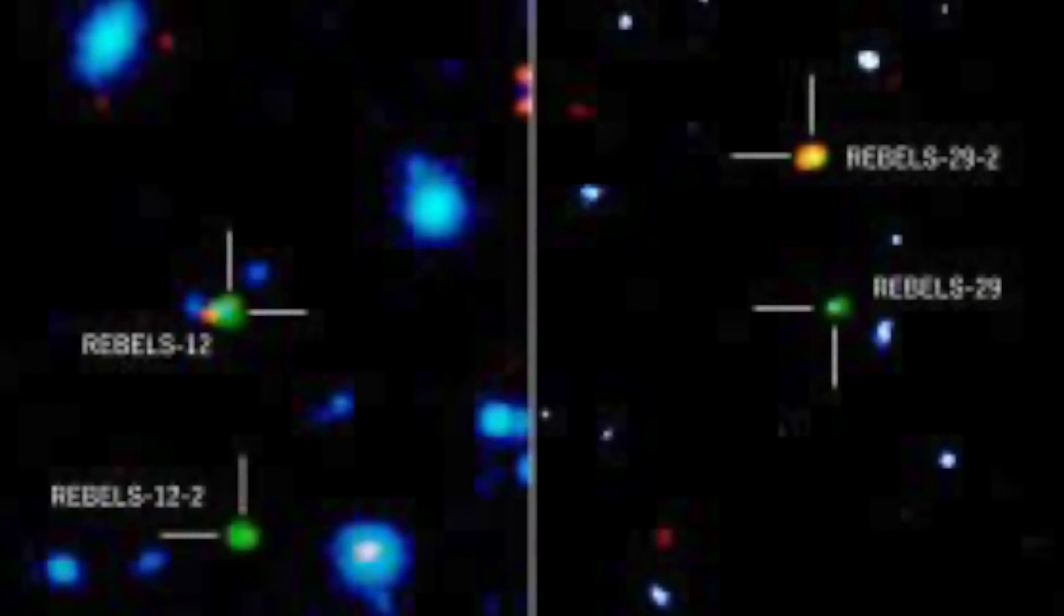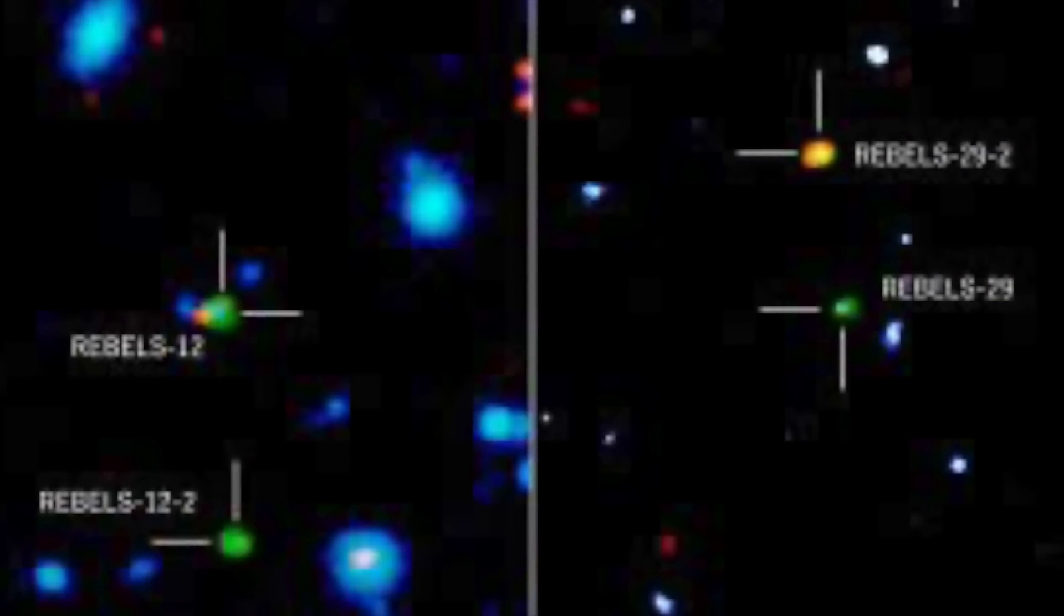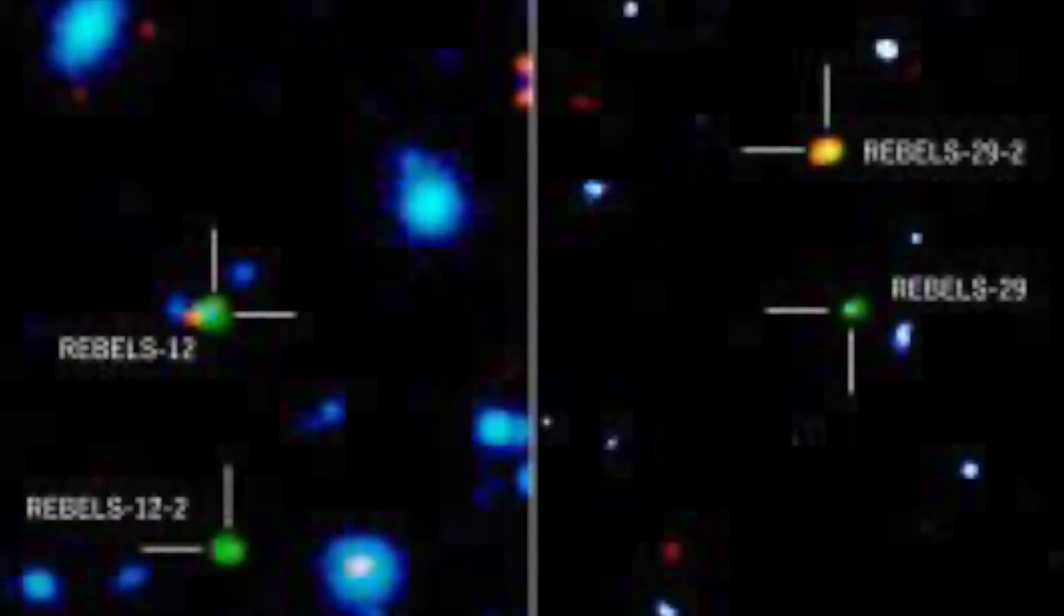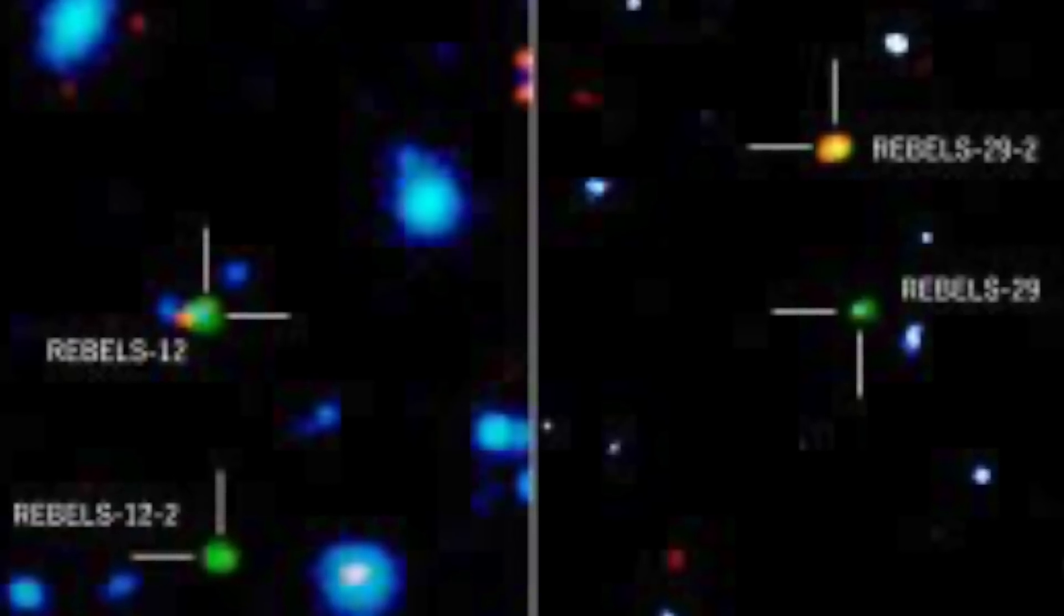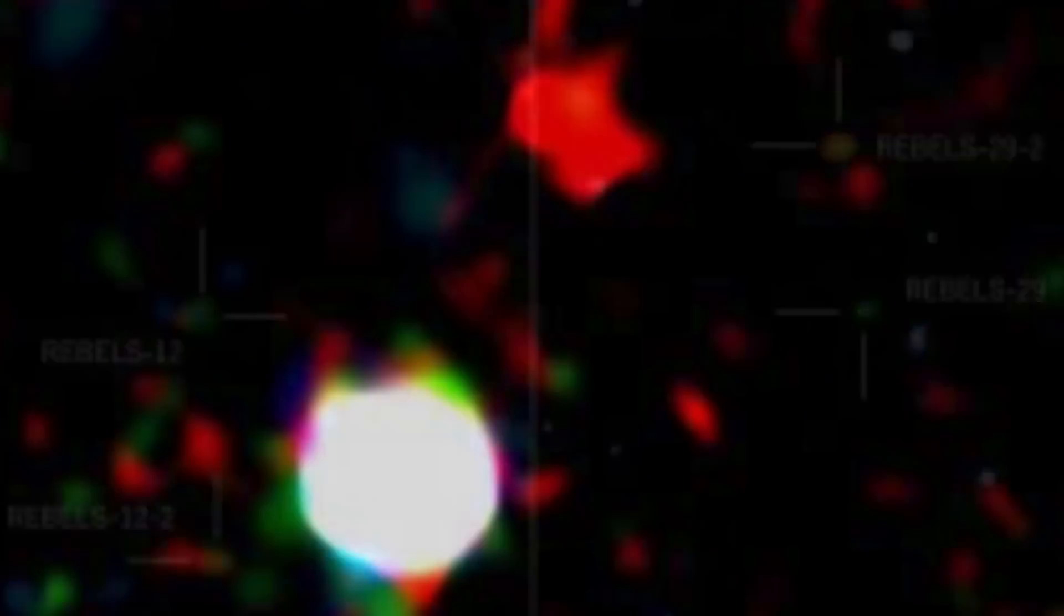The discovery of these two galaxies points to the possibility that one in five galaxies at cosmic dawn are hidden by thick clouds of dust. It is suggested by Fudamoto and those working with him that a blind wide area survey to find more galaxies hidden in this way should happen in the future.